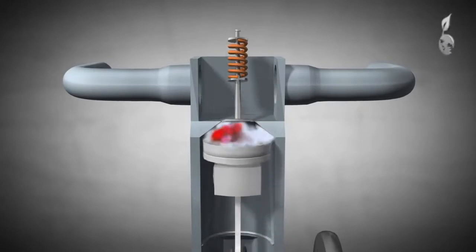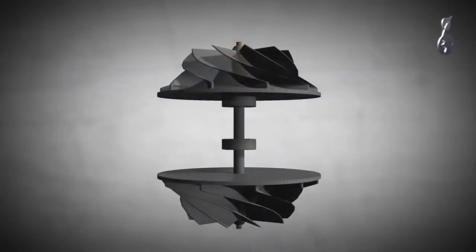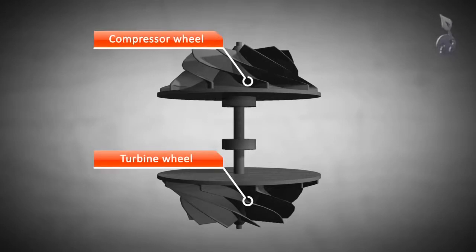Here the turbocharger comes into play. A standard turbo, as it is used in boats, airplanes, and cars, is composed of a shaft with a turbine wheel on one end and a compressor wheel on the other end.